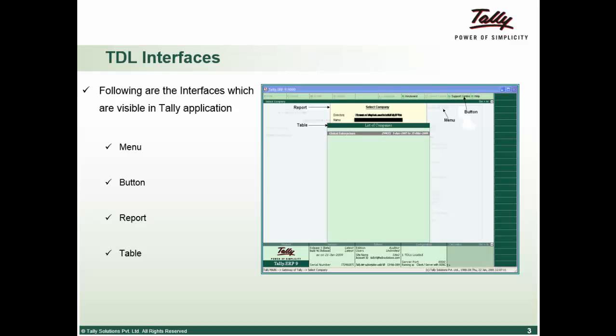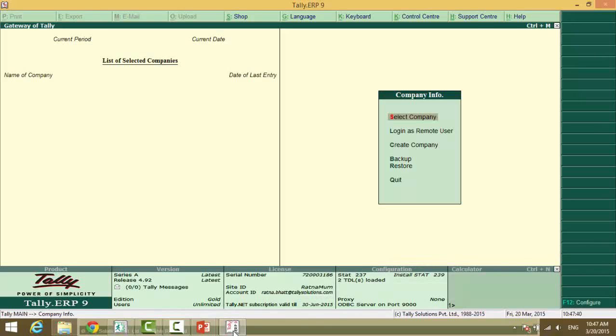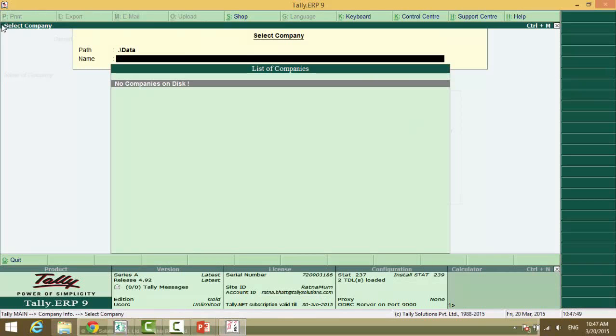Let us show you the Tally screen itself. This is the menu. From the end of the screen panel till this end is the report on the top that you see. The right and the bottom panels are the buttons, and this drop-down box or pop-up list is known as a table.